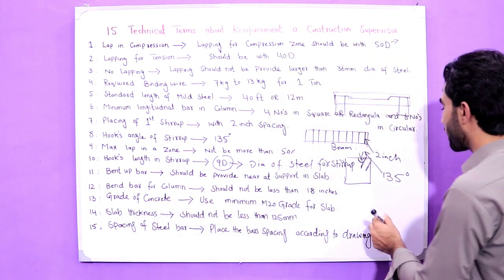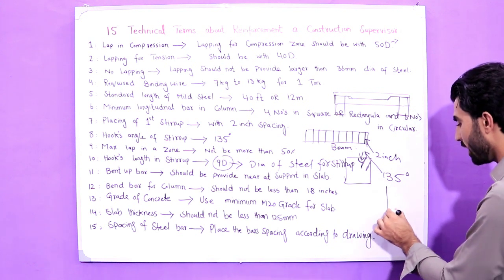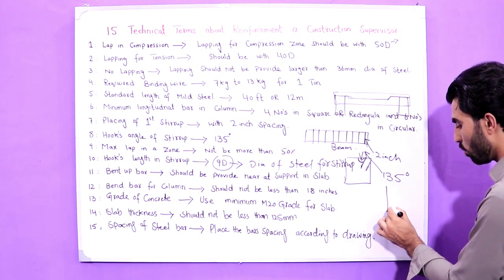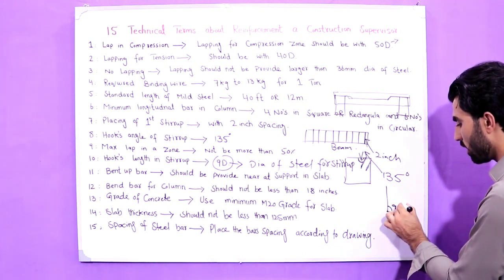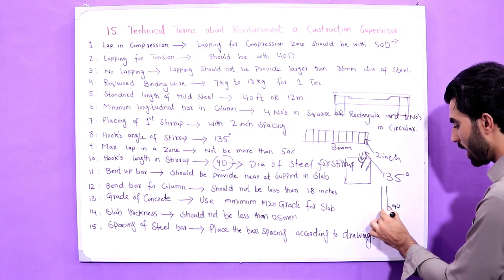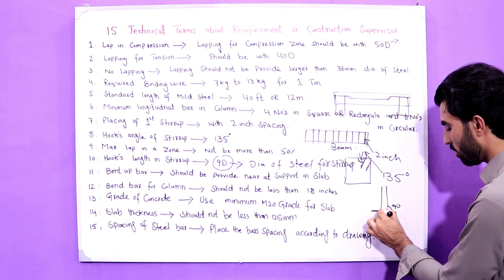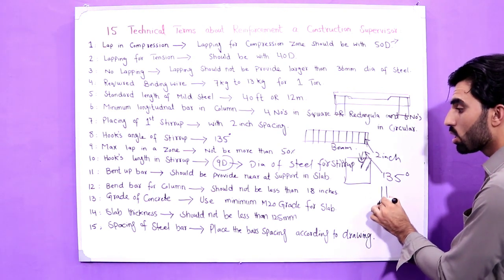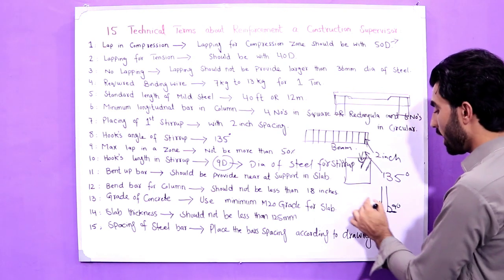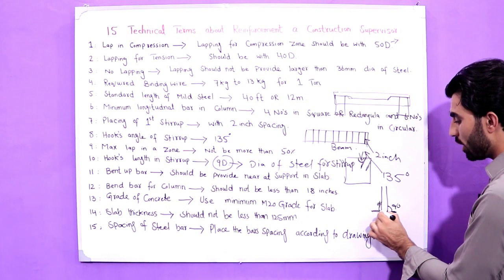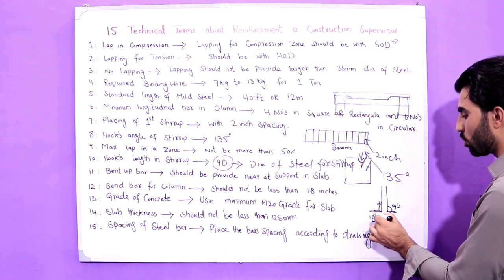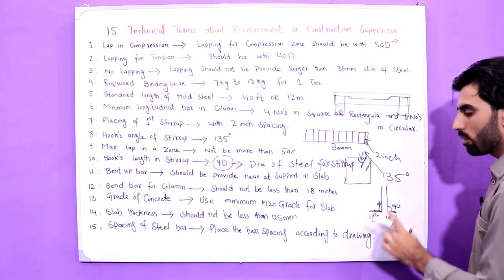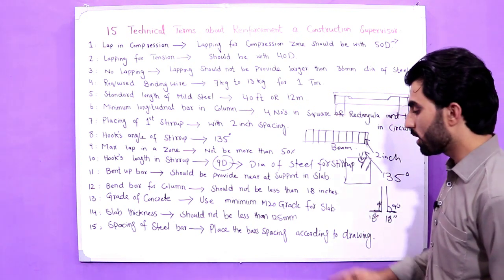The twelfth term is the bend bar for a column. A column is a vertical member, so we bend the bar at 90 degrees in the RCC column. The bend length should not be less than 18 inches.